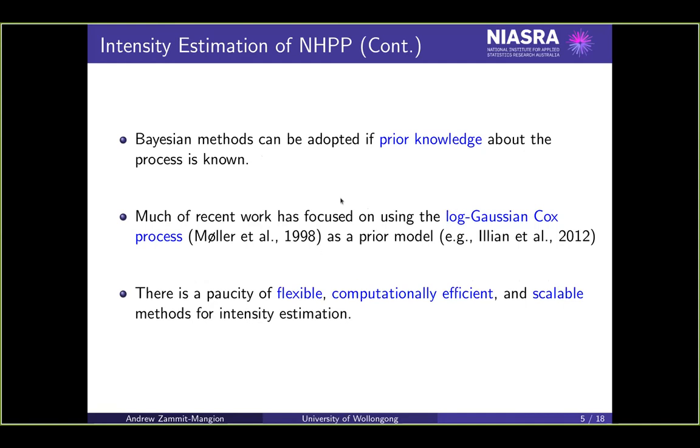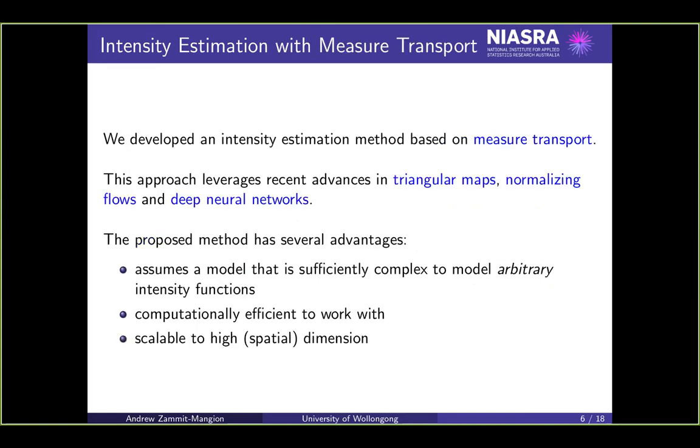Focusing on the LGCPs, Gaussian processes, especially when accompanied with a point process data model, tend to be quite computationally inefficient. Inference is quite difficult when working with LGCPs, when you're not considering other approximations. So what we wanted to do is exploit some recent advances in machine learning based on triangular maps, normalizing flows, and deep neural networks to see whether we can apply what we found in that literature to point processes.